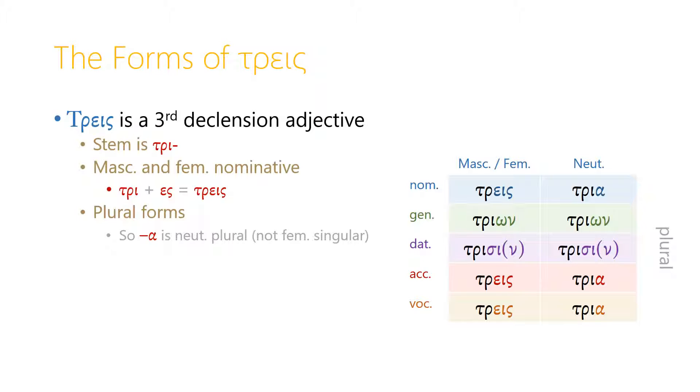Trace is a third declension adjective. So this time it's not the masculine and neuter that are similar. Now the masculine and feminine are identical in form, and the neuter is the odd man out. The neuter has slightly different third declension endings. So the stem is tree, and the masculine and feminine nominative is actually quite regular if you think of the stem tree running into the nominative plural third declension ending s, and then the iota and the s becoming reversed, being mixed up. We go from tris to trace.